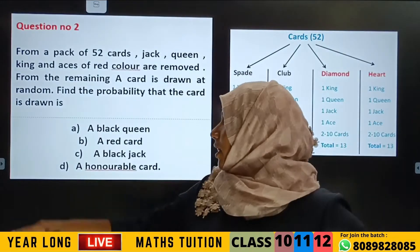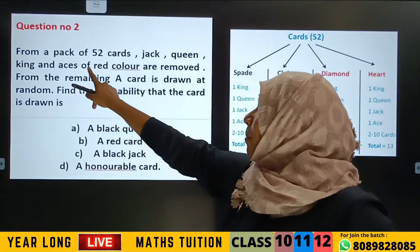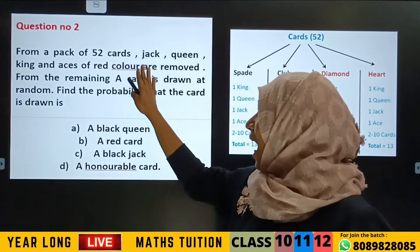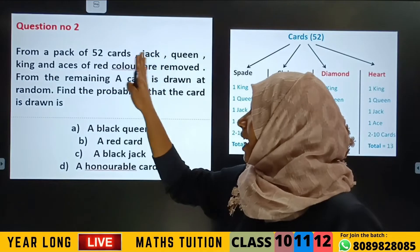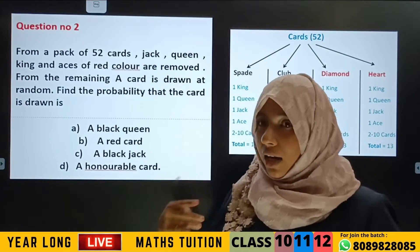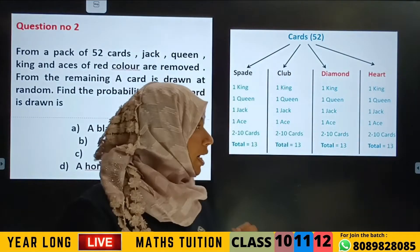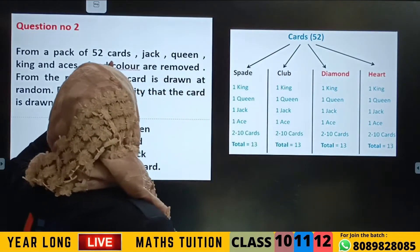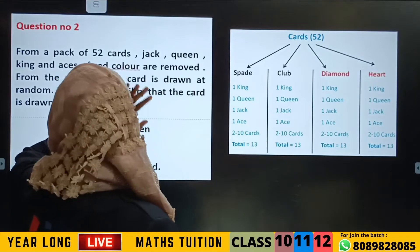Let us move to the next question. From a pack of 52 cards, Jack, Queen, King and Aces of red color are removed. That is the honorable cards.